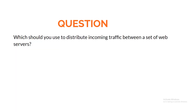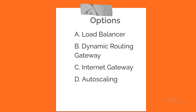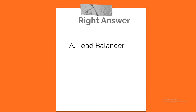Question. Which should you use to distribute incoming traffic between a set of web servers? A. Load Balancer. B. Dynamic Routing Gateway. C. Internet Gateway. D. Auto Scaling. Correct answer: A. Load Balancer.